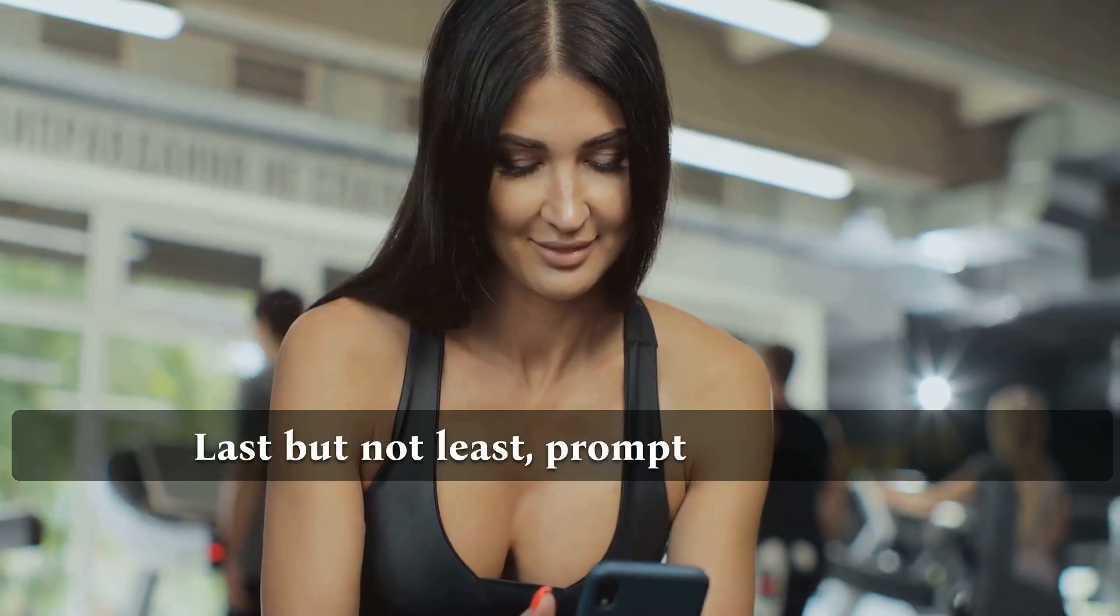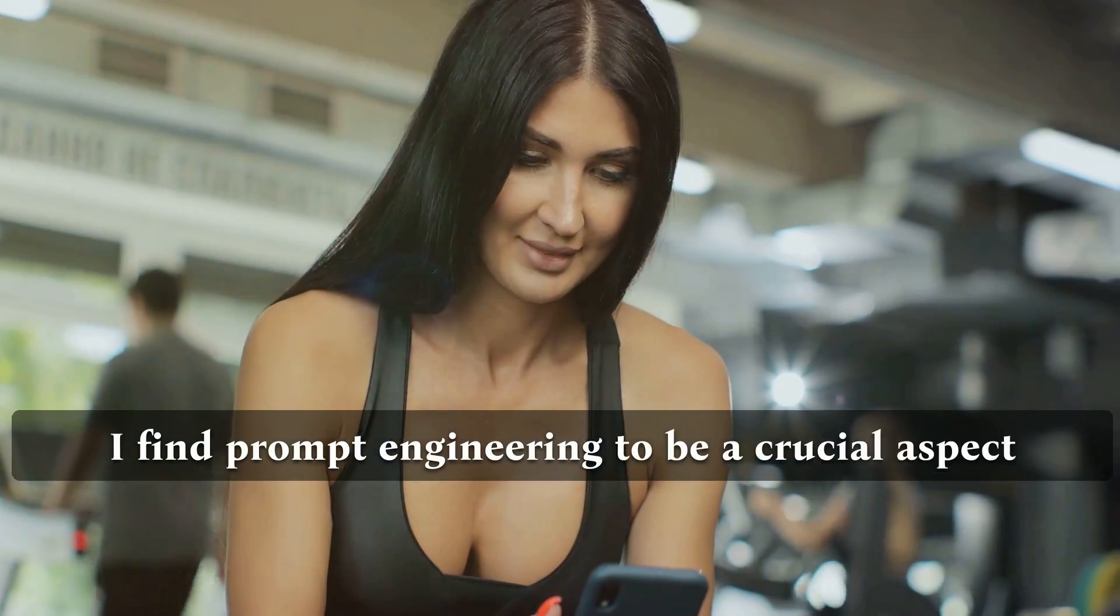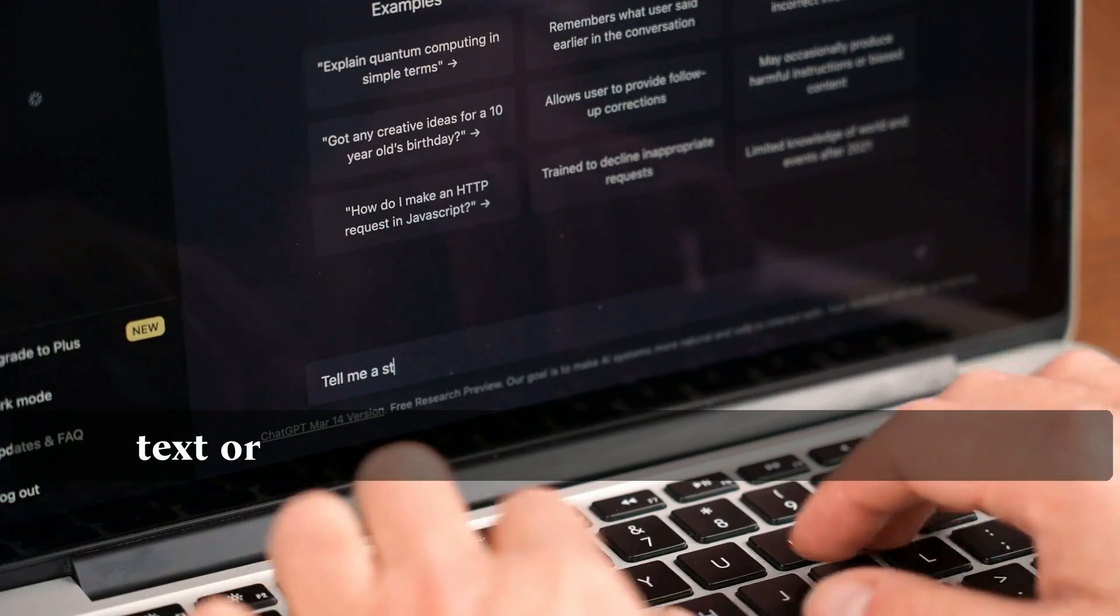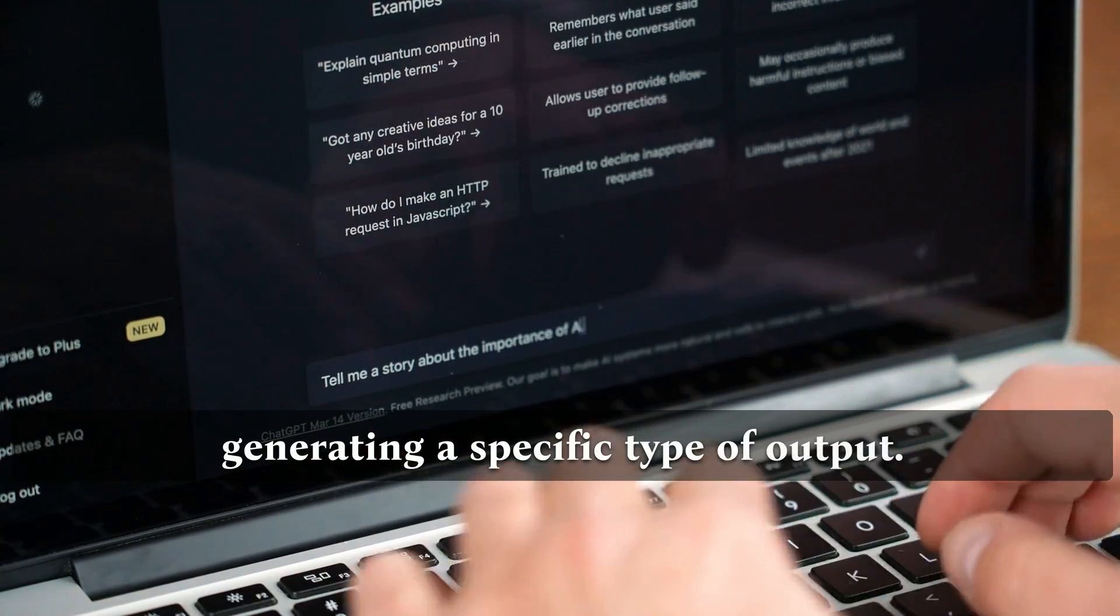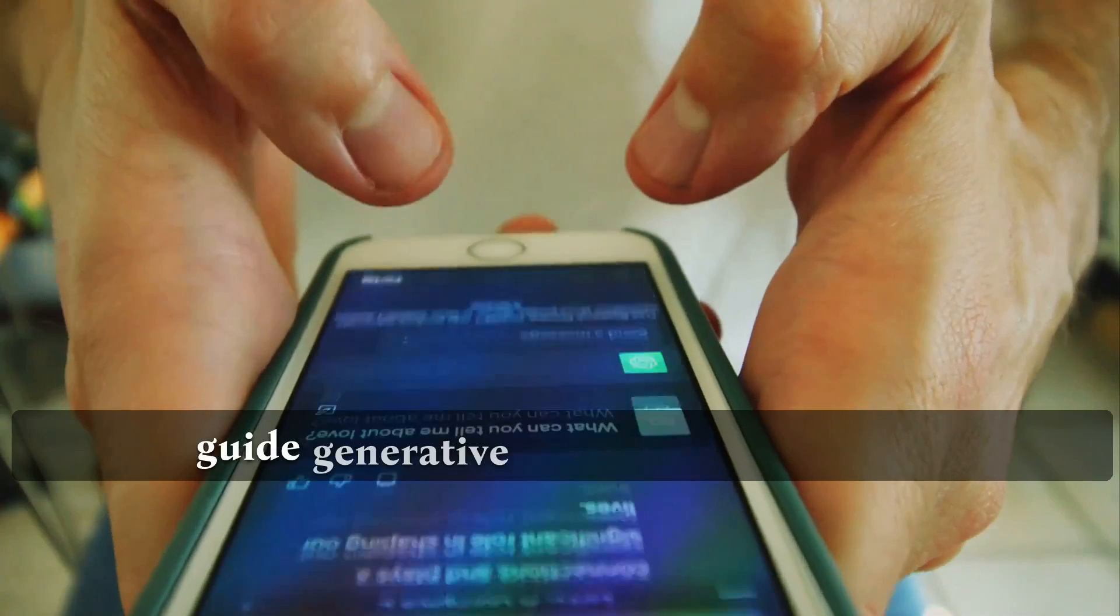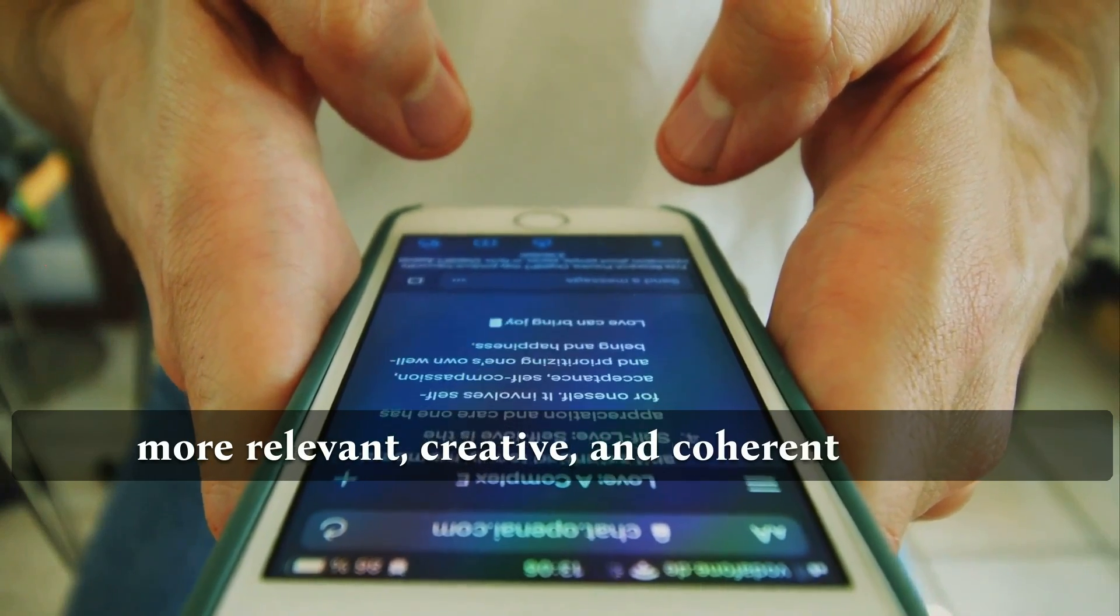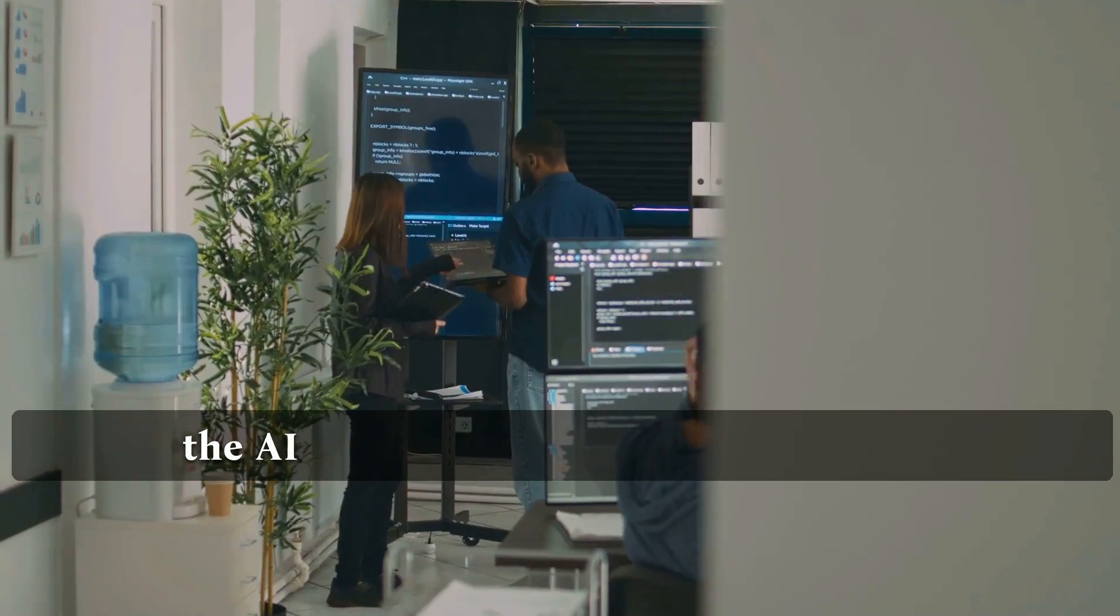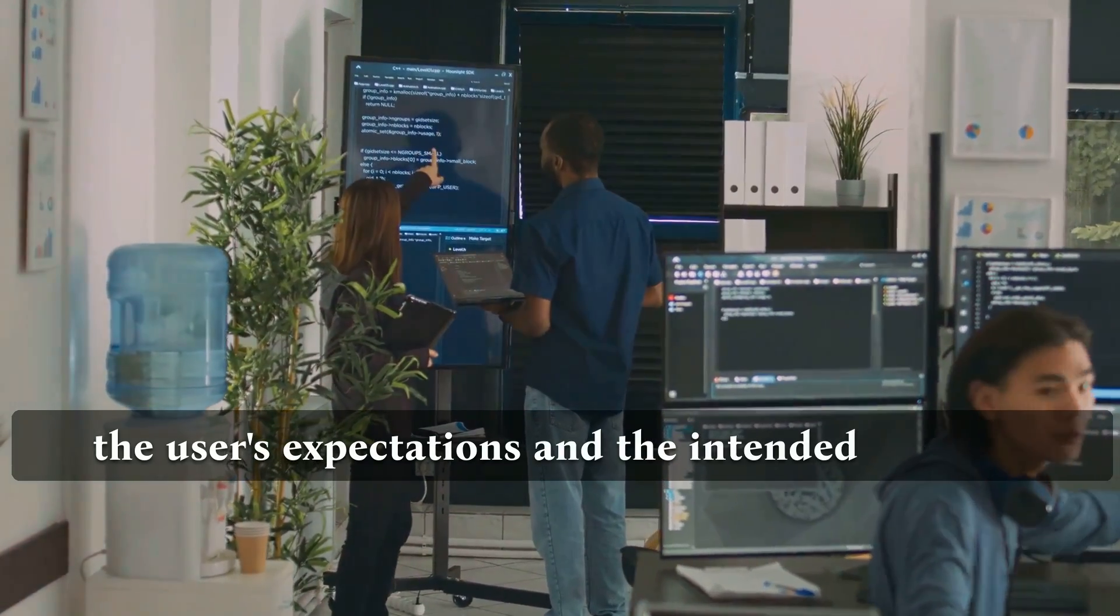Last but not least, prompt engineering. I find prompt engineering to be a crucial aspect when working with generative AI, as it involves structuring text or visual inputs to instruct the model on generating a specific type of output. By designing effective prompts, users can guide generative AI models to produce more relevant, creative, and coherent results. This process is essential for ensuring that the AI generates outputs that align with the user's expectations and the intended purpose.